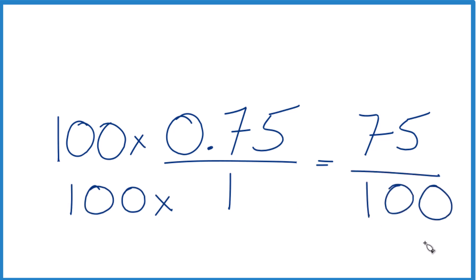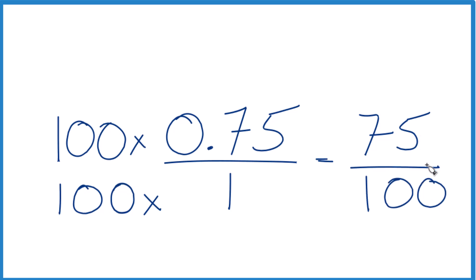We end up with 75 over 100. That's the fraction, but it's not in simplest terms, so we can simplify it. It looks like 25 goes into both 75 and 100 evenly. 75 divided by 25 gives us 3, and 100 divided by 25 gives us 4.